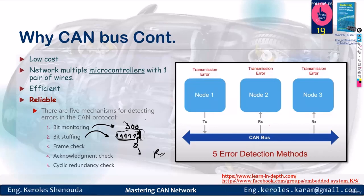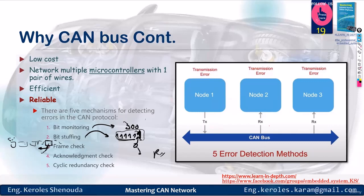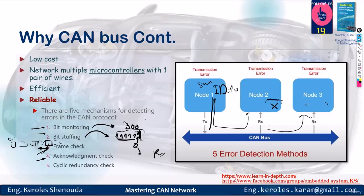It has a frame check where it examines the frame containing the start of frame, identifier, data, and CRC. If a specific part of the frame is damaged, or if certain bits are supposed to be set to specific values and they differ, it identifies the frame as erroneous and raises an error. There's also an acknowledgement check. You can have software in the car written to send to an ID that no node is assigned. If you send ID 10 and no node has ID 10, they won't return an acknowledgement.